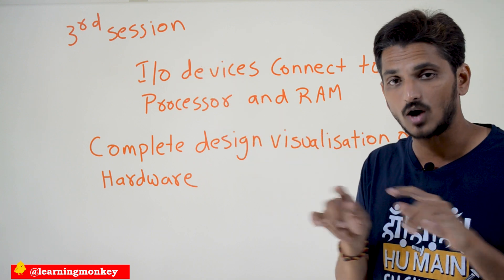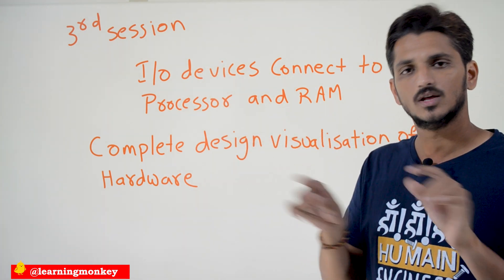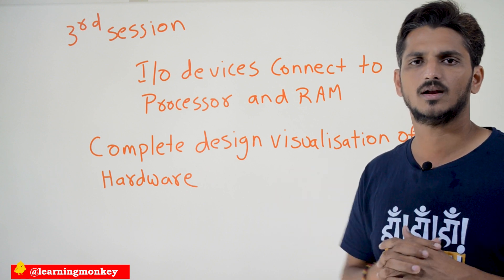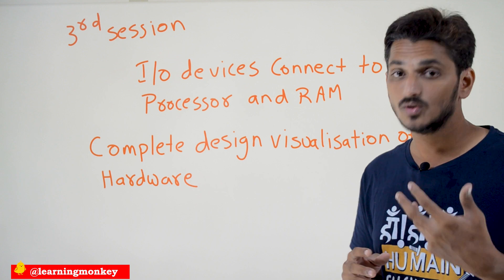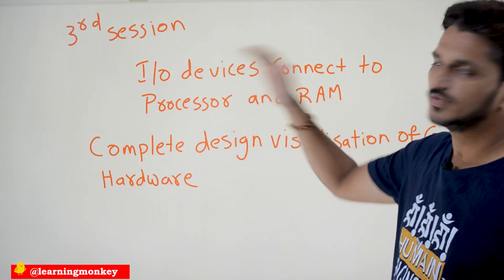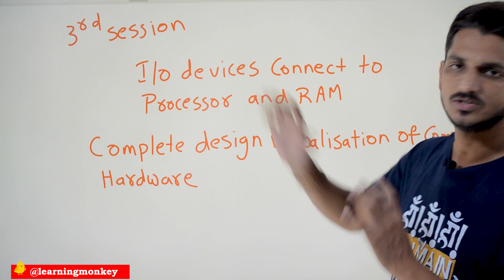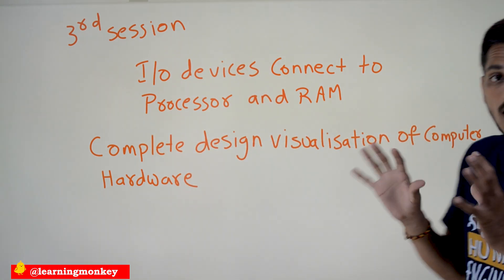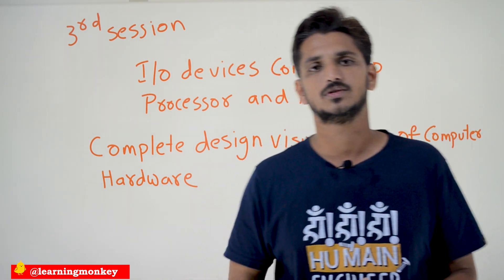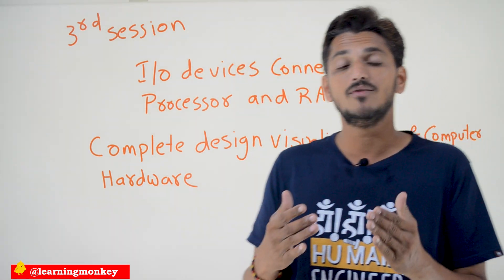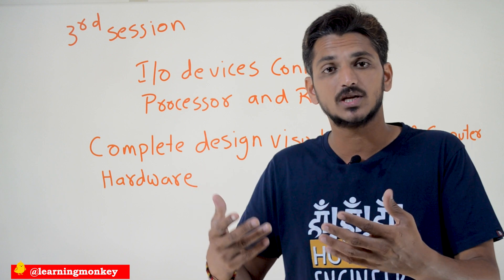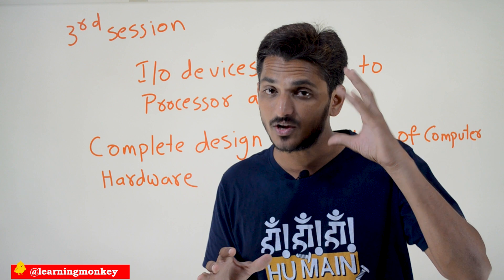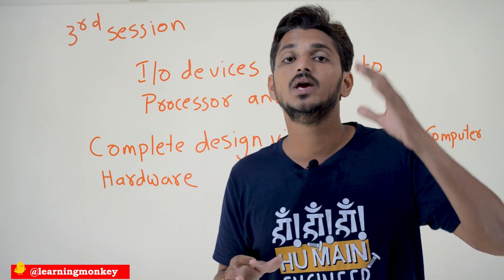At the hardware level — how circuits are designed, how they get information, how interrupts are handled in the computer — all these things you will understand after completion of the entire three-session course. The complete design visualization of computer hardware is what you achieve. This is very helpful in understanding your next subject, operating systems. If you have this level of basic understanding, studying advanced subjects becomes very easy.